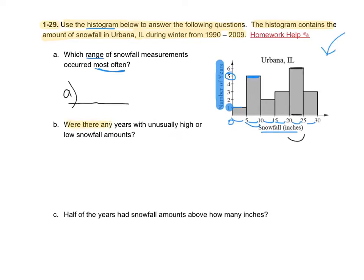Were there any years with unusually high or low snowfall amounts? We're looking for unusually high or unusually low values. Look at the bars again, decide which are unusually high and unusually low, and answer, for example, B as well.